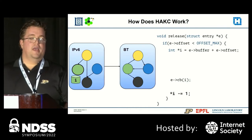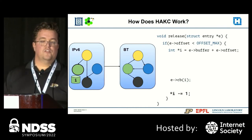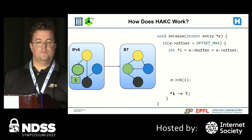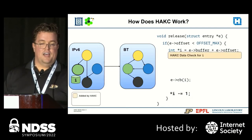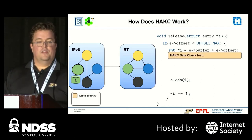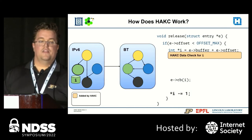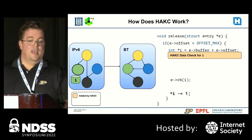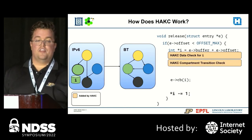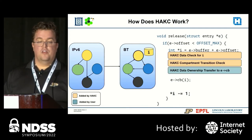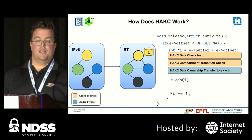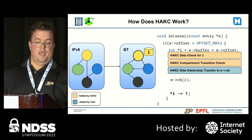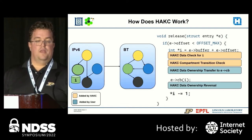HACKS enforces the data access policy within a compartment and performs compartment transfers by instrumenting code using an LLVM pass. In our example from earlier, HACKS first checks that I is a valid pointer. This check involves retrieving the color of the integer pointed to by I, checking the color is valid as per the access control policy, and finally checking that the pointer is signed appropriately using PAC. Next, HACKS adds a check to ensure that the function pointer is in the set of valid compartment transitions. The transfer process, which is written by the user, actually calls the color and signing functions to transfer the ownership of I to the yellow Bluetooth compartment and back to the green IPv6 compartment when the function returns.